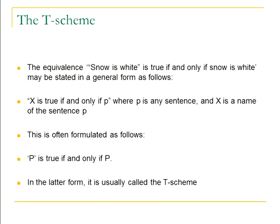We can express the equivalence in more general terms. More generally: X is true if and only if P, where P is any sentence and X is a name of that sentence. This is often put as: P is true if and only if P. 'Snow is white' is true if and only if snow is white; 'coal is black' is true if and only if coal is black. This general formulation is usually called the T-scheme — T for truth, and T for Tarski.